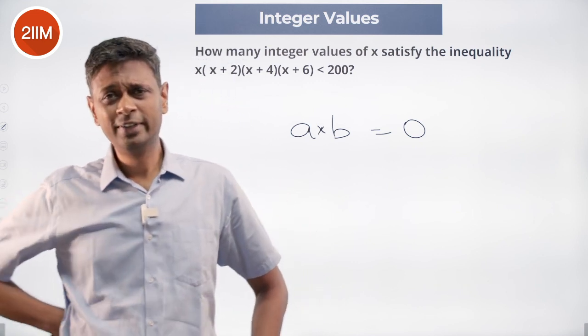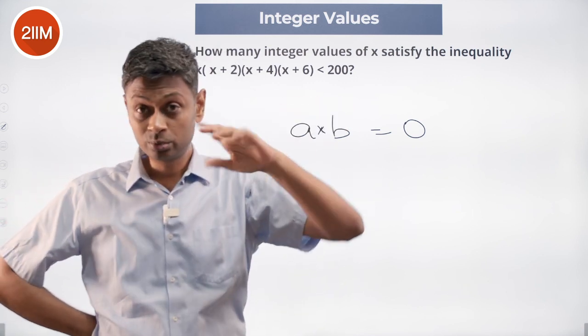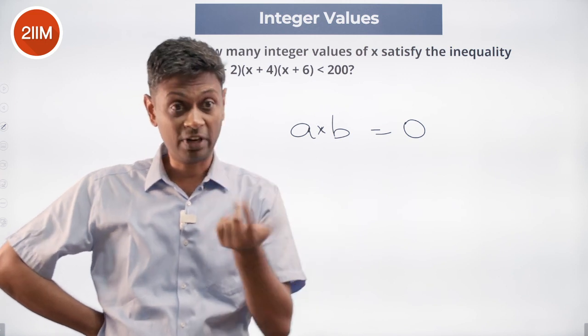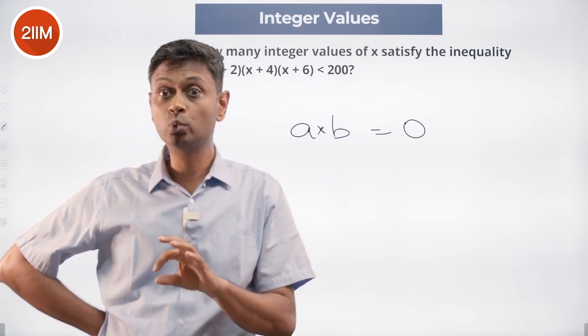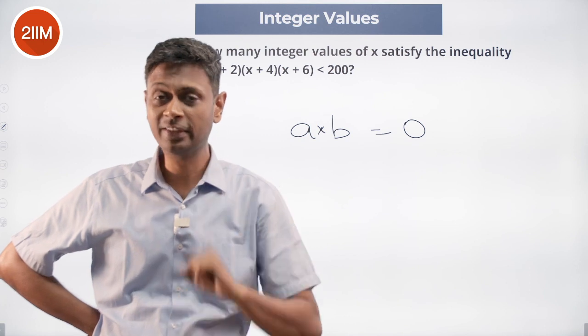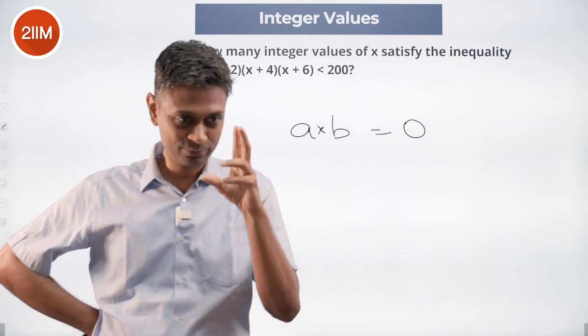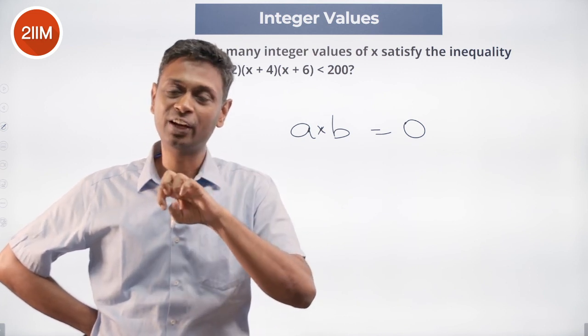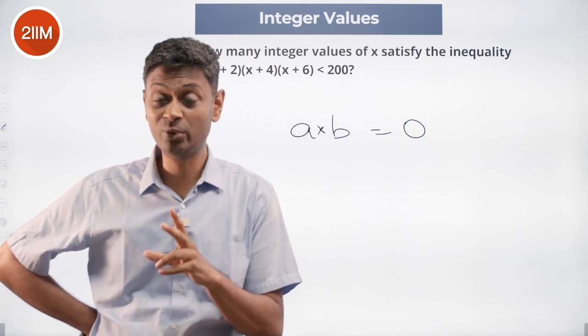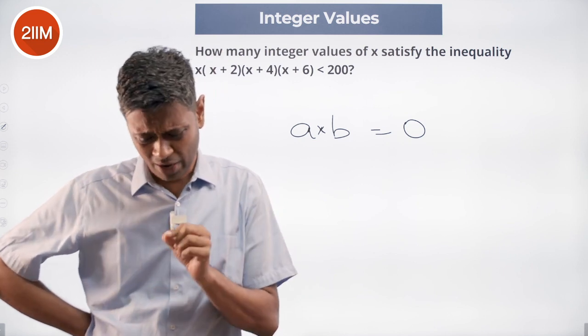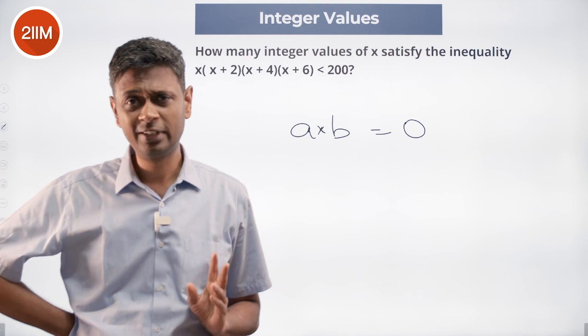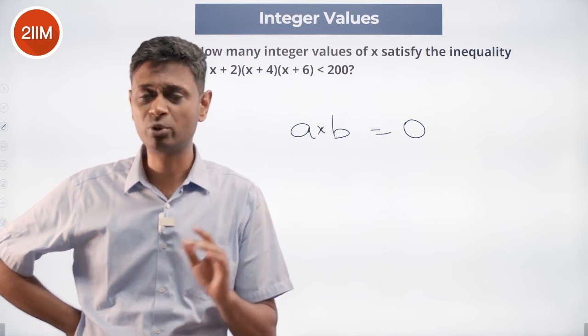If a into b is 2, it can be 1 into 2, 2 into 1, it could be 5 by 2 into 4 by 5, you can have 2 by 10 into 10, several ways we can generate 2. But you have to have a product of two numbers be 0 and at least one of them has to be 0.